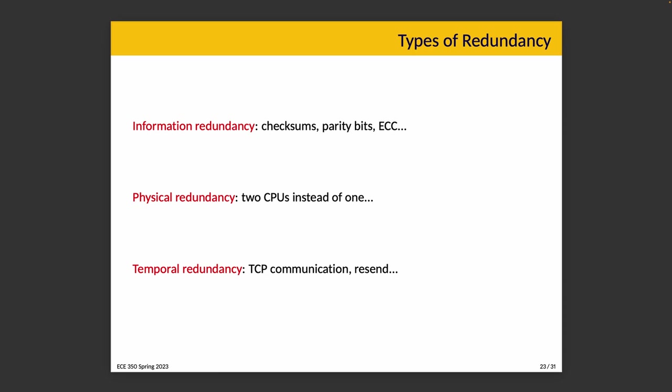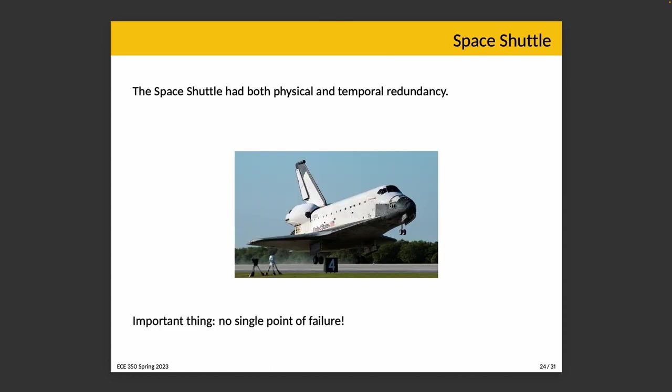There's a third kind of redundancy worth talking about: temporal redundancy. Temporal — as in time. This is repeating an operation when an error is detected. That's what happens with the TCP protocol — when a receiver notices that a packet is missing or damaged, you request that the packet be resent to make sure the data received is correct. You may also consider temporal redundancy to mean having more than one execution of a task to verify that results agree, or sending a message multiple times to make sure at least one arrives. The space shuttle had both physical and temporal redundancy for important calculations.